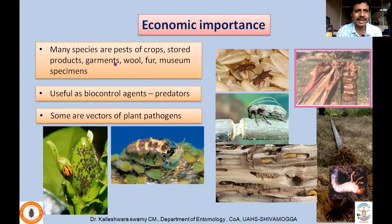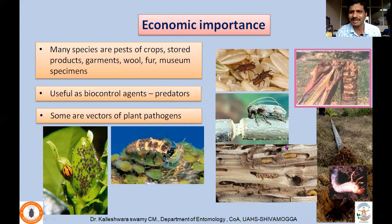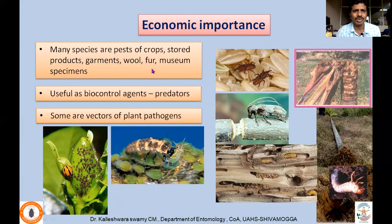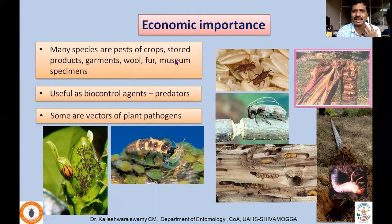Coming to economic importance — many species are pests of our crops, especially agriculturally. Like coconut, grapes, many forest species. Name any crop and there may be a beetle feeder for that, including stored grain items. They cause a lot of problems also in garments, wool, fur, and even in museums where they attack preserved specimens. They feed on a variety of foodstuffs and as a result become very problematic.